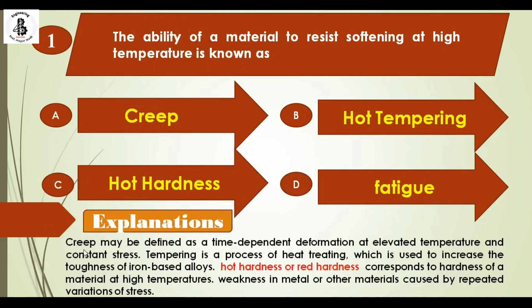Creep may be defined as a time-dependent deformation at elevated temperature and constant stress. Tempering is a process of heat treating used to increase the toughness of iron-based alloys. Hot hardness, or red hardness, corresponds to the hardness of a material at higher temperature. Fatigue is the weakness in metals caused by repeated variations of stress. So as per the ability of the material to resist softening at high temperature, that is known as hot hardness. The right answer is option C.